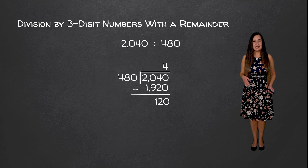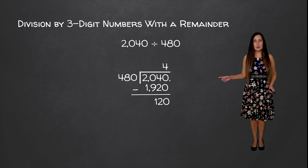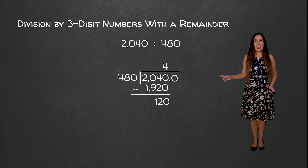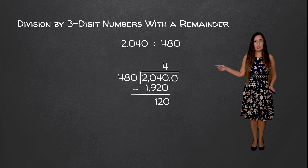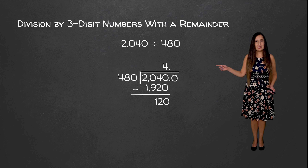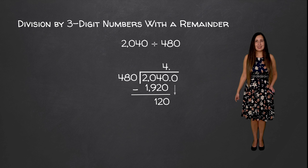So now to get our decimal answer, we are going to write a decimal after 2040 and add a zero as well. After our quotient, which is 4 right now, we are going to add a decimal place as well and bring down this zero.